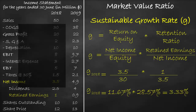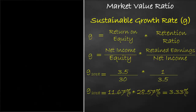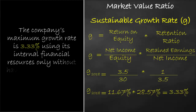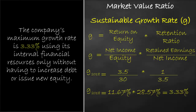The unit of sustainable growth rate is a percentage. This means that the company's maximum growth rate is 3.33% using its internal financial resources only, without having to increase debt or issue new equity. The higher the sustainable growth rate, the better.